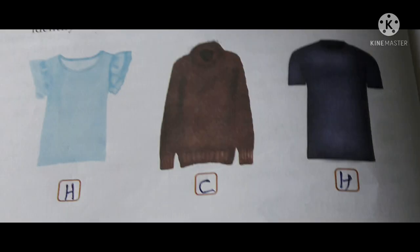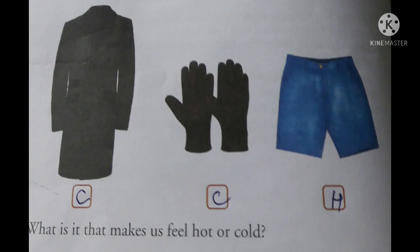Before starting the chapter, I will tell you something. We prefer wearing certain clothing in hot weather and other types in cold or rainy weather. We have to do this activity: look at the items of clothing in the picture below and write H for hot and C for cold in the boxes below each picture. The first item is worn in hot weather, second in cold, third in hot, fourth in cold, fifth in cold, and sixth in hot weather.